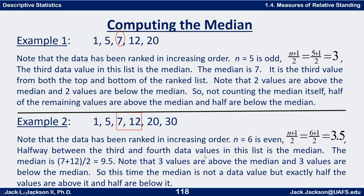Example one: the data set is 1, 5, 7, 12, and 20. It's already in increasing order. n is 5, which is odd. n plus one over two is five plus one over two — six over two is three. So the third one from the bottom is also the third one from the top: one, two, three is seven. So seven is the median. If we don't count the median itself, two values are below and two are above — approximately half below and half above.